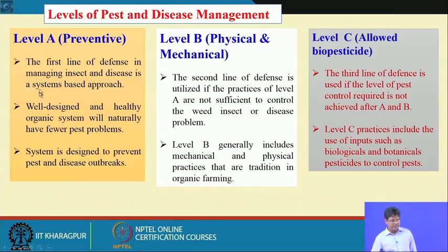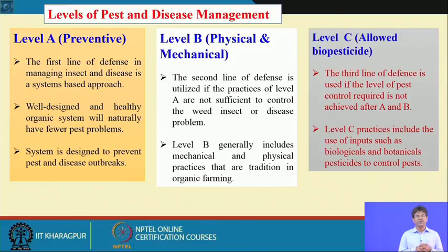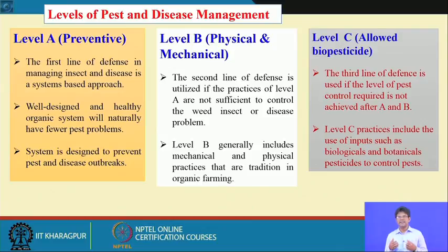Level A is the first line of defense — it is a system-based approach. A well-designed and healthy organic system will naturally have fewer pest problems. Going the organic way, the system is less prone to pest and disease.